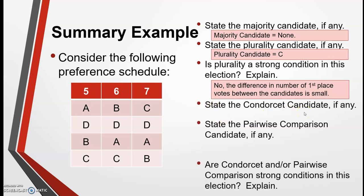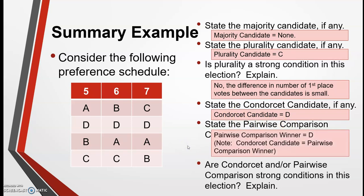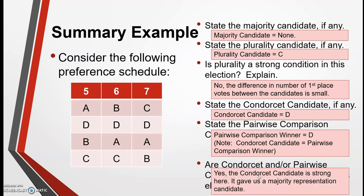Is there a Condorcet candidate? To determine that, we compare each candidate. It turns out there is a Condorcet candidate — Candidate D. Knowing we have a Condorcet candidate, we can easily identify the pairwise comparison winner: a Condorcet candidate will always win the pairwise comparison method, so the pairwise comparison winner is D. And yes, this is a strong condition — if you have a Condorcet candidate, they beat everybody else head to head, making it a strong result.